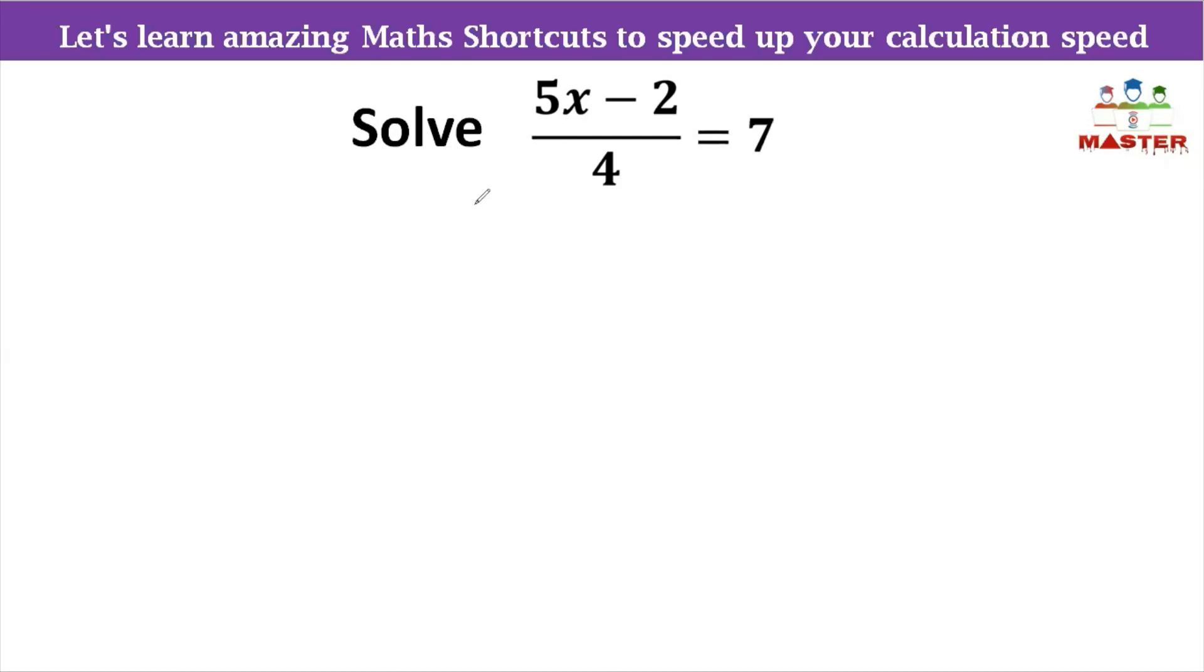If we look at the question, there is 5 into x. That is the number x times 5. Next, minus symbol is minus 2. Divided by 4 is equal to 7. We will find the x value. Now, what do we need to do? 2 divided by 4, next equal to 7. Now, we will find the x value using the opposite operator.